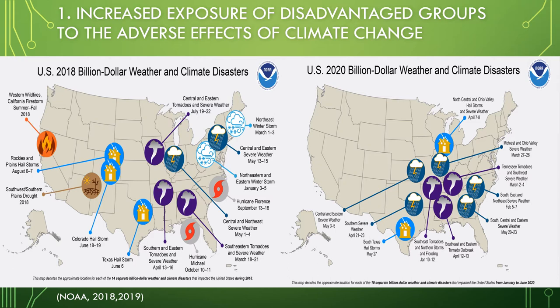On the right-hand side, I have the U.S. 2020 billion-dollar weather and climate disasters that occurred from January to June of 2020.